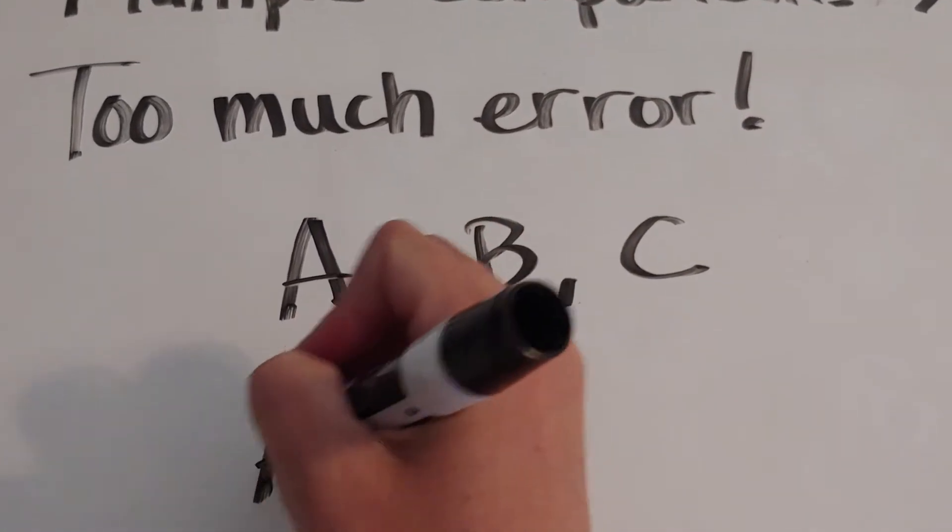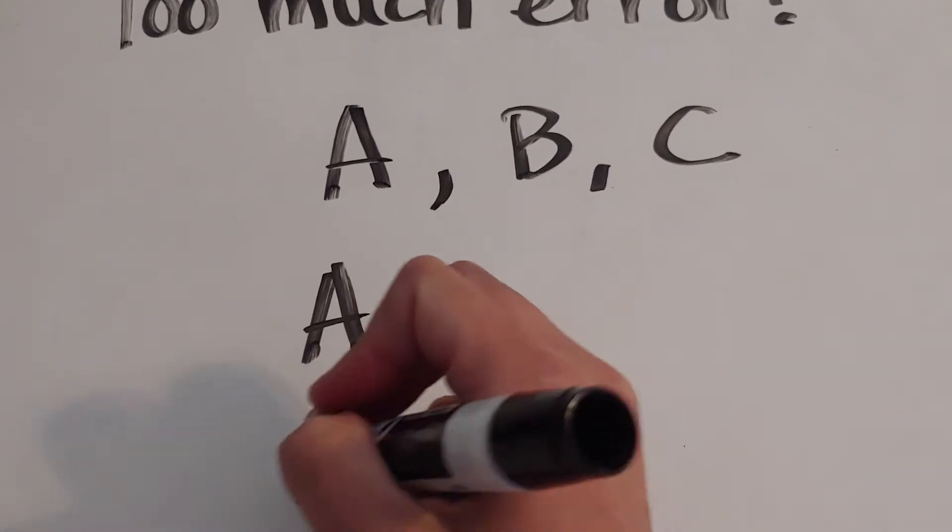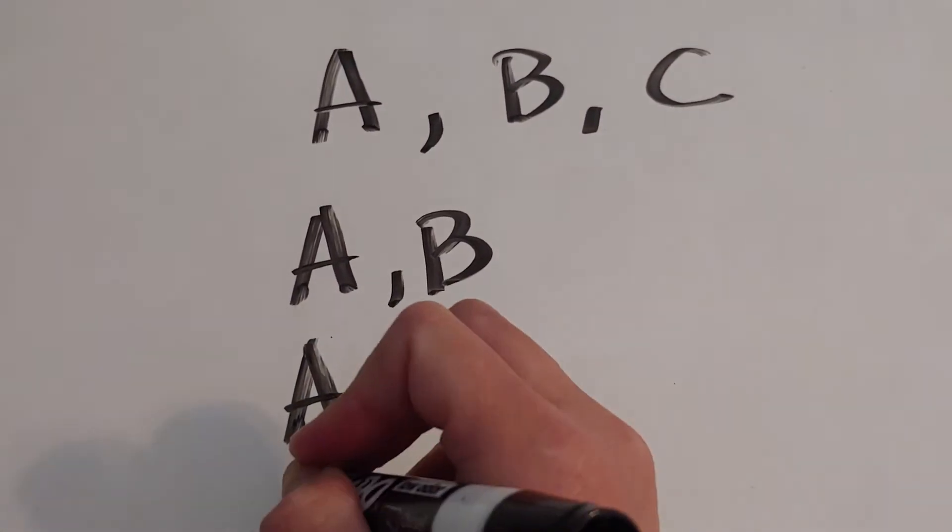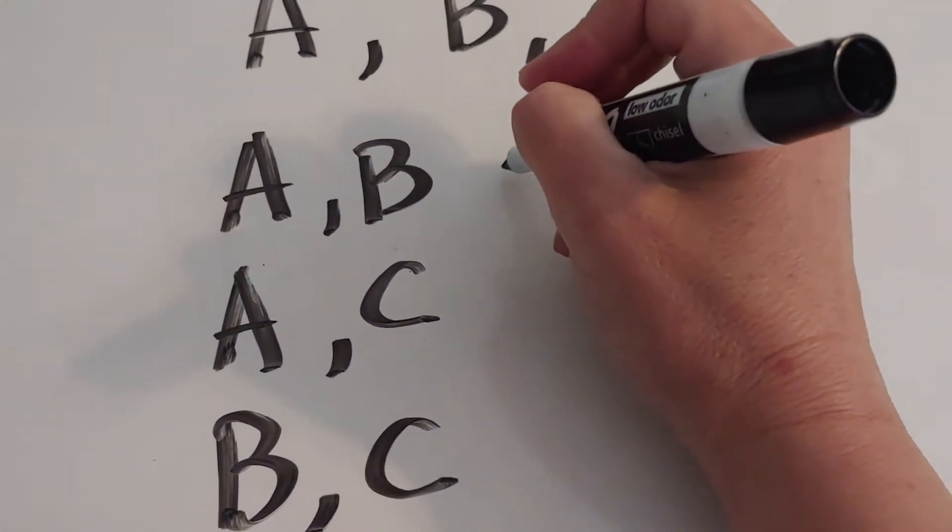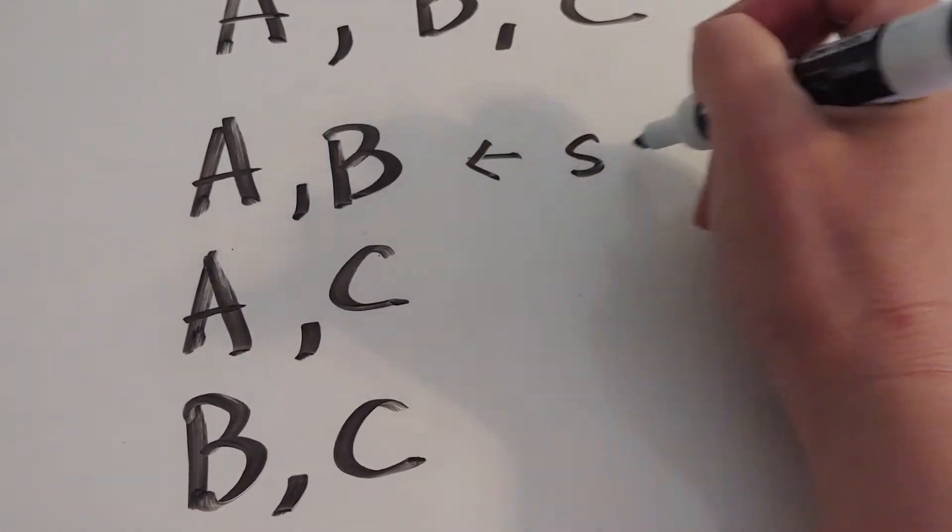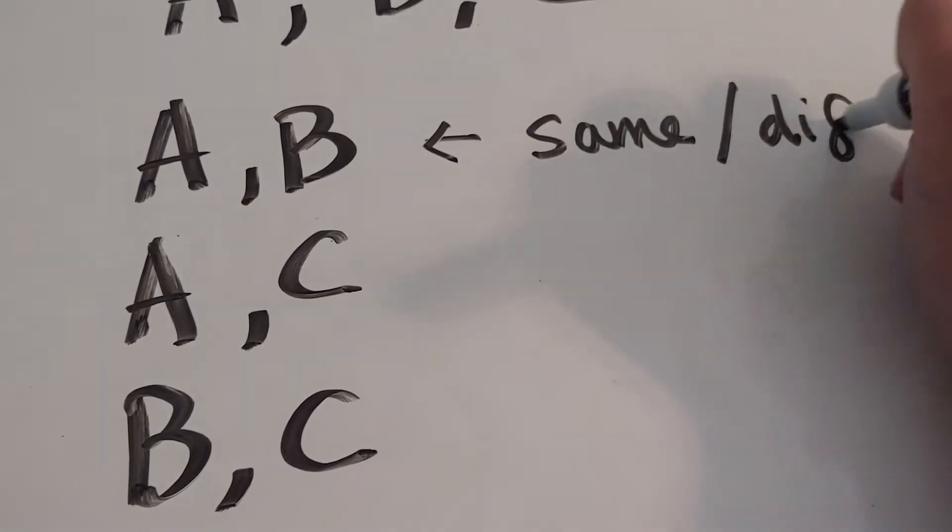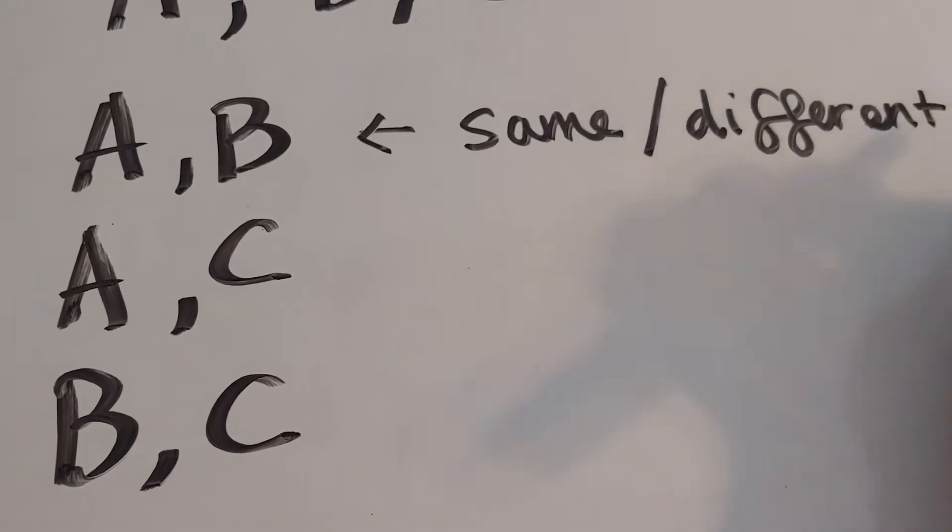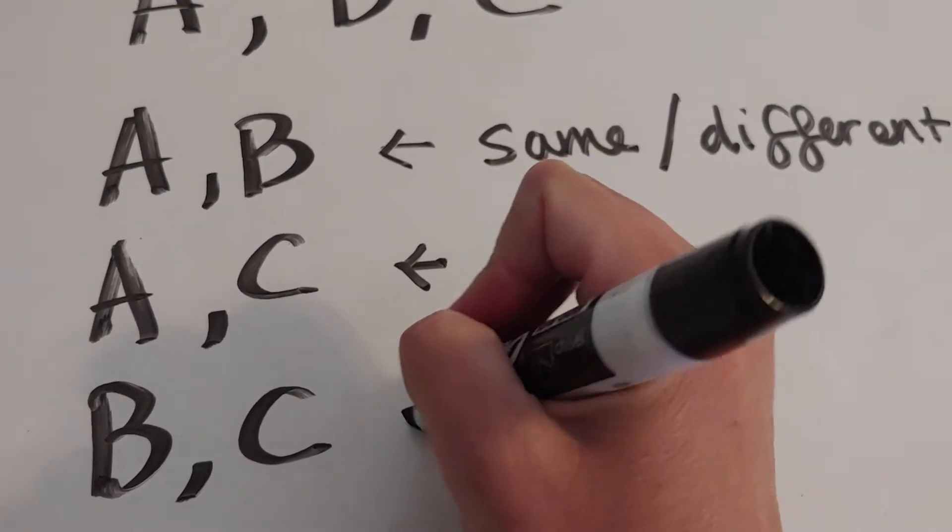What I'm going to do is look at A and B, look at A and C, and look at B and C. We're going to repeat these comparisons.